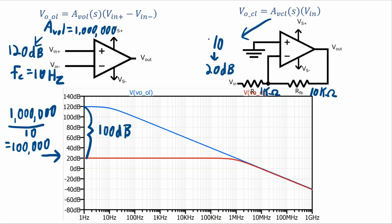The new corner frequency is at 1 MHz, which is 100,000 times higher than the 10 Hz corner frequency of the open-loop circuit — exactly what we expect. If your closed-loop circuit dials down the gain by a particular factor, then the corner frequency will be increased by the same factor. Of course, this ignores effects like parasitic capacitances, but it's a good approximation — and much better than assuming the closed-loop gain is constant over infinite bandwidth.